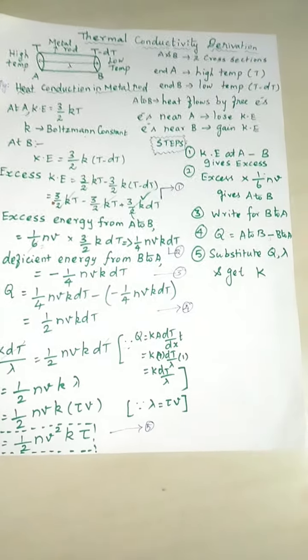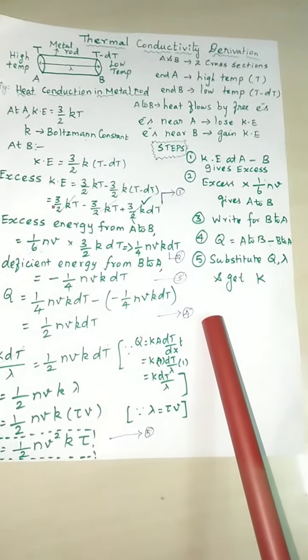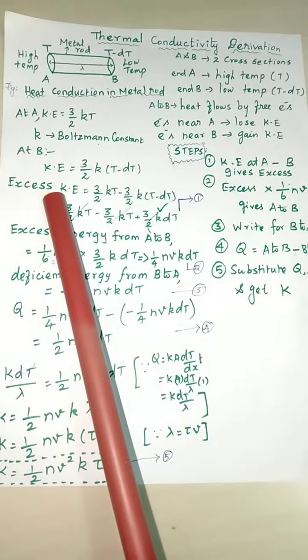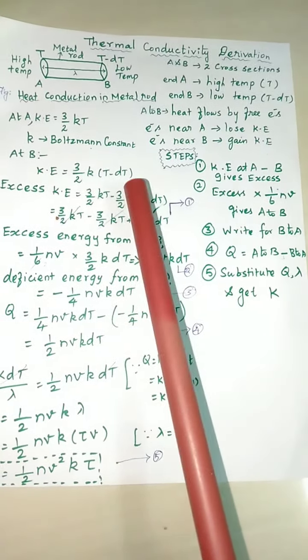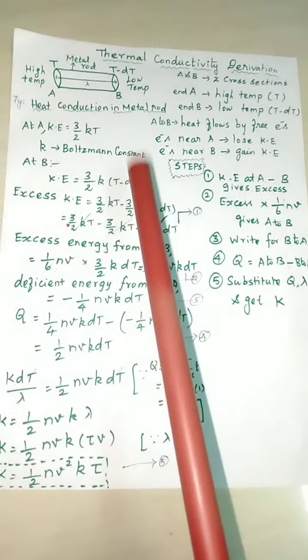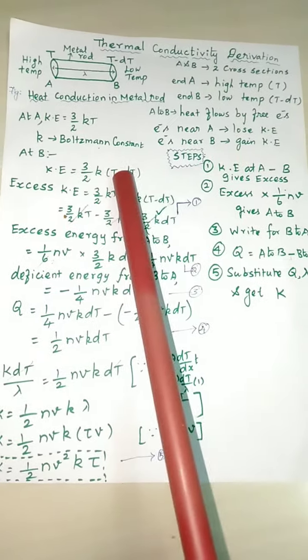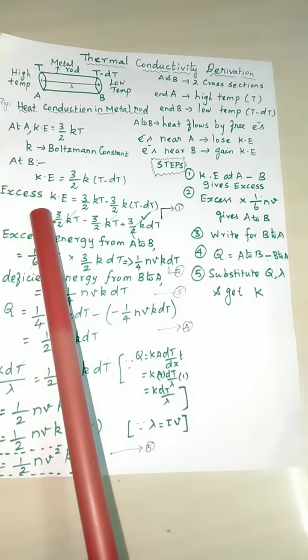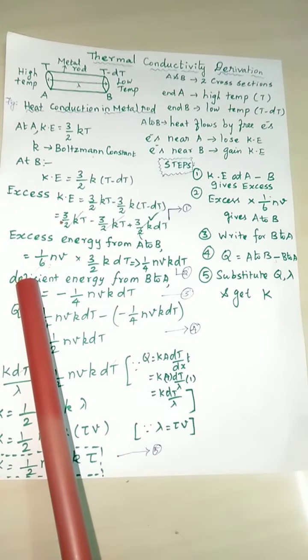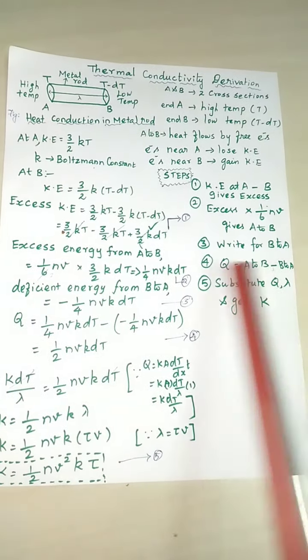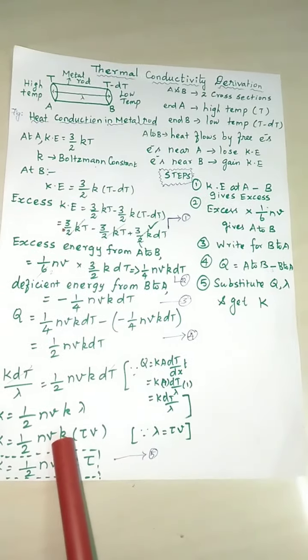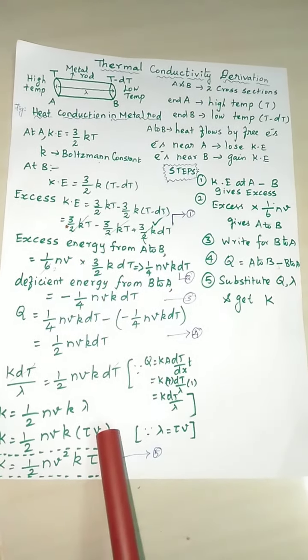Explanations and what all are the steps here we followed. Once again we just recall: kinetic energy at the end A minus at the end B - that is the first step that gives excess energy. Next we have to find B to A - that is deficient energy. Then we have to find Q. Q is nothing but the excess minus deficient. Finally substitute Q value and the lambda value, we get the result of K.